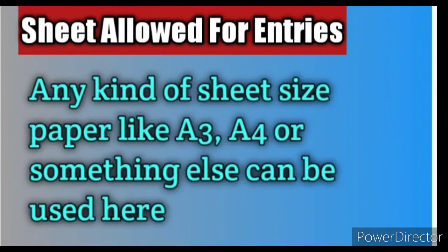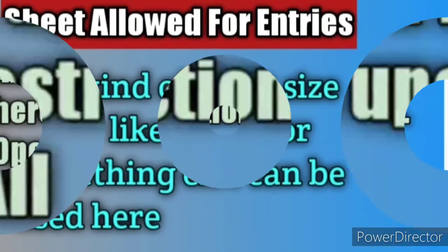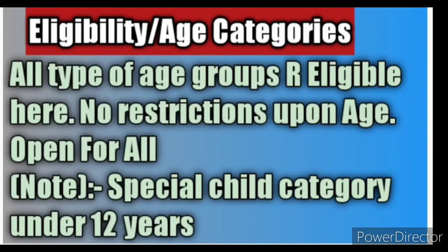Regarding sheet size allowed for entries: any kind of sheet size paper like A3, A4, or something else can be used. Regarding eligibility and age categories: all types of age groups are eligible, no restrictions upon age — open for all. Note: special Child category is for under 12 years.